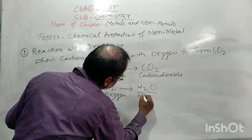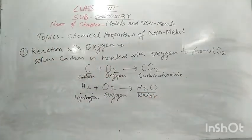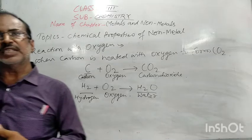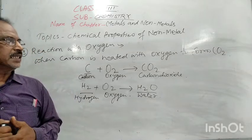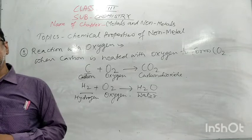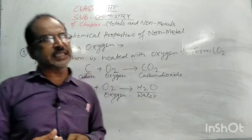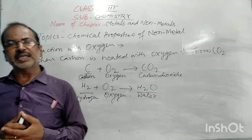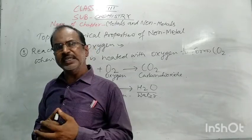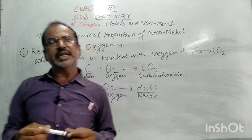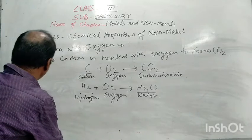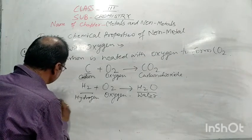Water is the product. You can see that metallic oxides are basic in nature, while non-metallic oxides are acidic in nature. To test this, we use litmus paper. When we dissolve a non-metallic oxide and test with blue litmus, it will change to red color — confirming it is a non-metallic oxide with acidic nature.